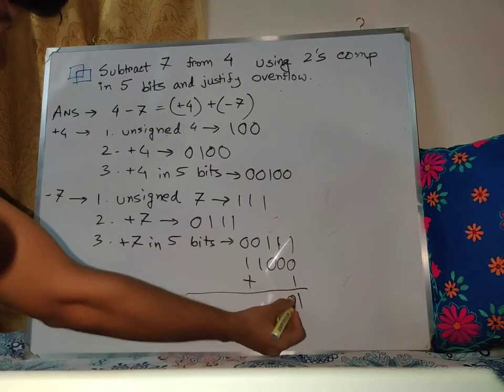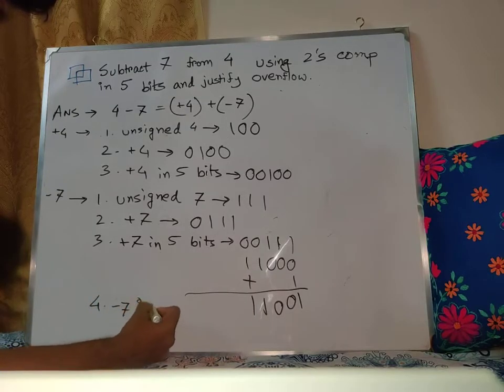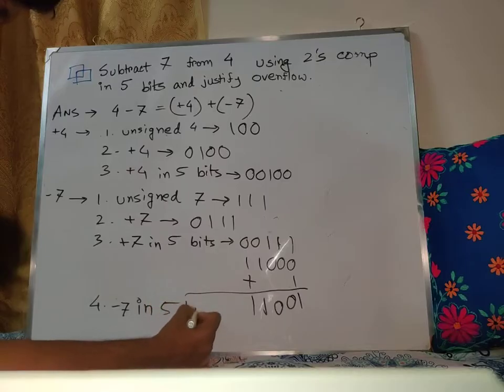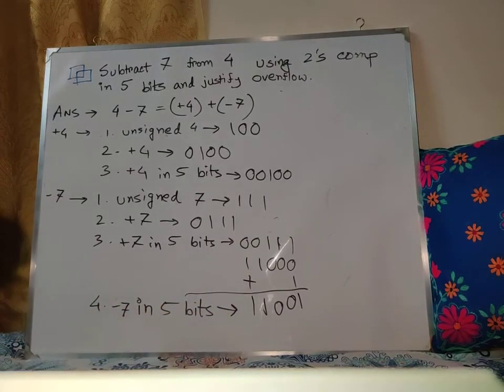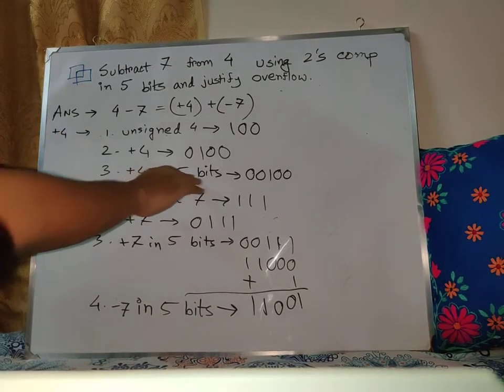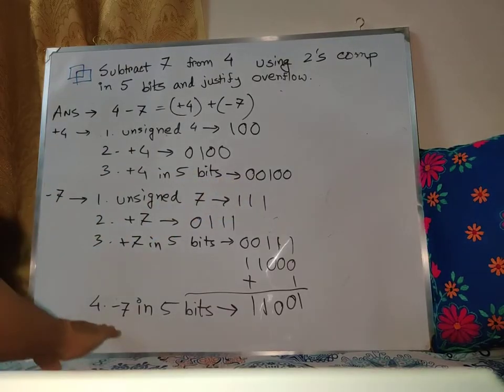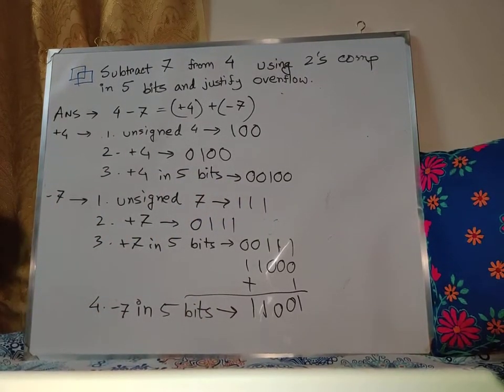So minus 7 in 5 bits will be the two's complement. Now I have plus 4's binary in 5 bits and minus 7's binary in 5 bits.